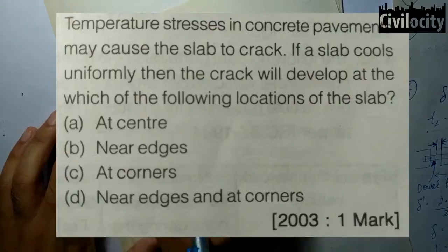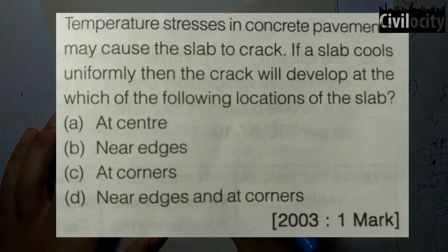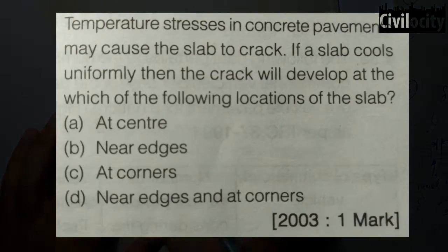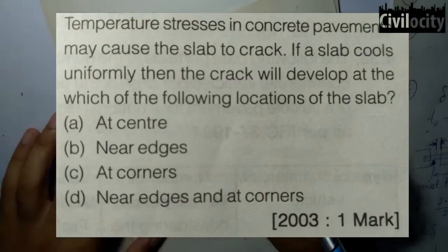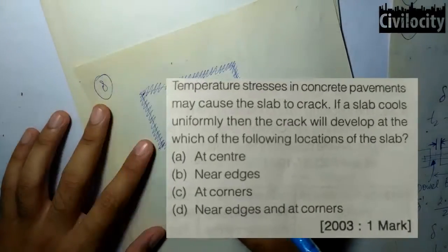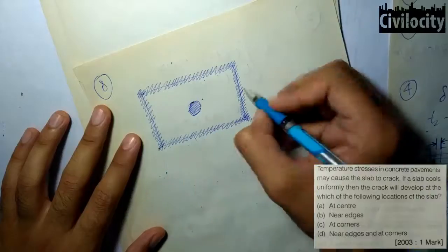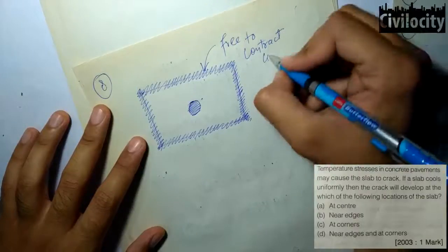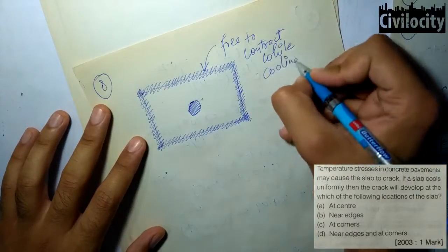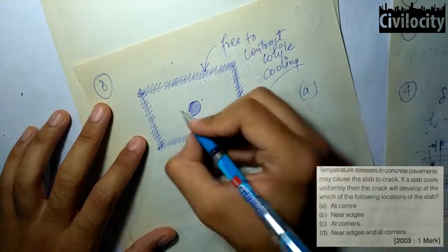This question asks: if a concrete pavement slab cools uniformly, where will cracks develop — at the center, near edges, at corners, or near edges and corners? The edges and corners of the slab are more in contact with air compared to the center, and they are also free to contract while cooling. So when a slab cools uniformly, cracks are more likely to develop at the center. Option A is correct.